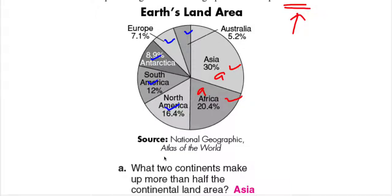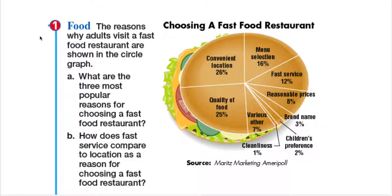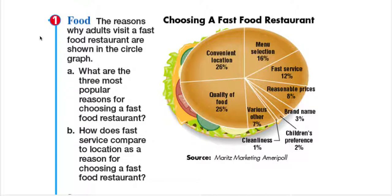That's how you interpret a circle graph presented to you. In seventh grade, we will learn how to create our own circle graph given data. Now let's look at example number one from your book. The reasons why adults visit a fast-food restaurant are shown in a circle graph. The reasons are: convenient location 26%, quality food 25%, menu selection 16%, fast service 12%, reasonable prices 8%.